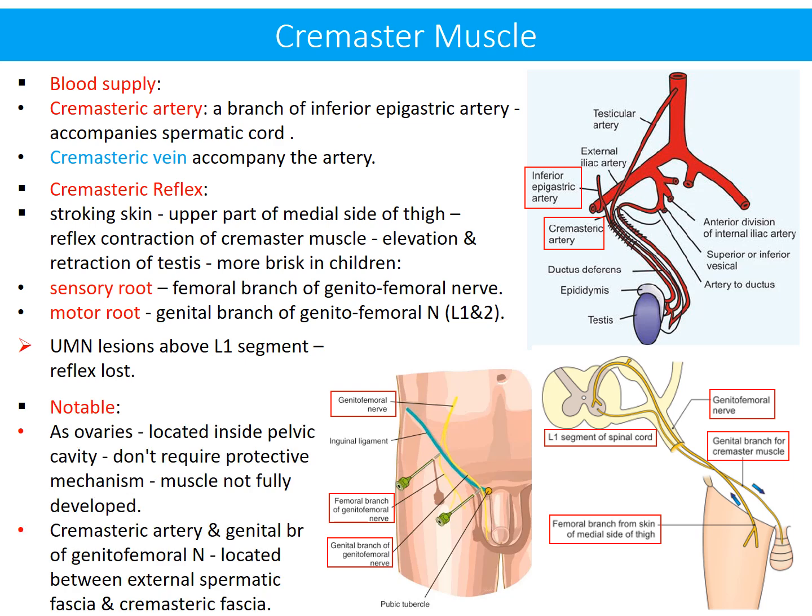Notable points: Number 1 — as ovaries are located inside the pelvic cavity, they do not require a protective mechanism, hence the muscle is not fully developed in females. Number 2 — the cremasteric artery and genital branch of the genitofemoral nerve are located between the external spermatic fascia and the cremasteric fascia, meaning they lie superficial to the cremasteric muscle and not deep to the cremasteric muscle or cremasteric fascia.